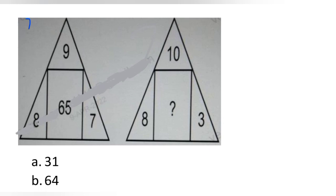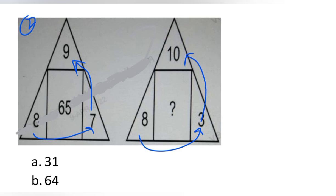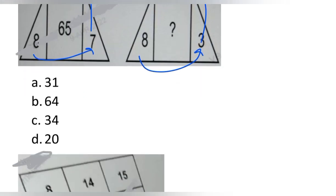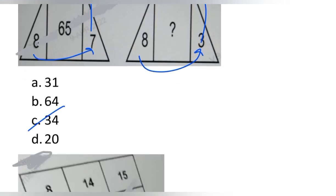Next, also 2 marks. We have 9, 8, and 7. Directly: 8×7 = 56, 56+9 = 65. Then 8×3 = 24, 24+10 = 34. Checking the options — yes, 34 is in the options. So the answer is 34.